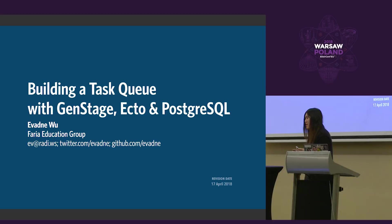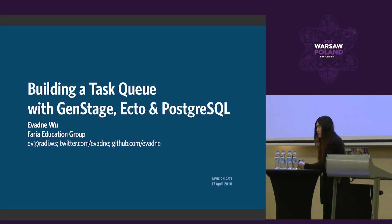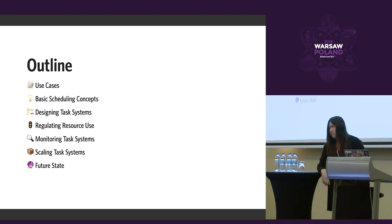Good morning, everybody. Today I'm going to talk briefly about building a task queue in GenStage, also using Ecto and PostgreSQL. It's going to have seven major parts. The outline is below. First, I'll talk about the use cases that we ourselves were facing before deciding to build such a task queue.